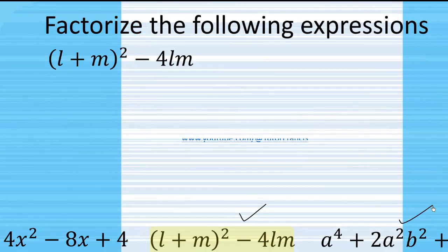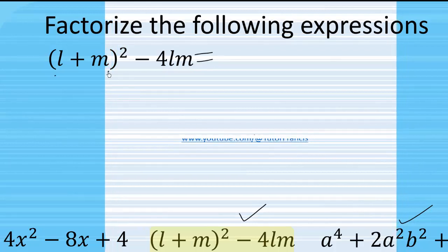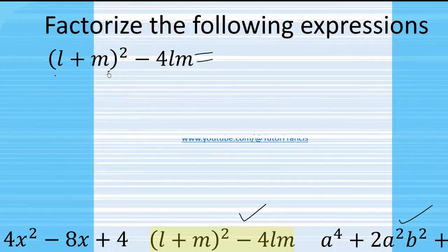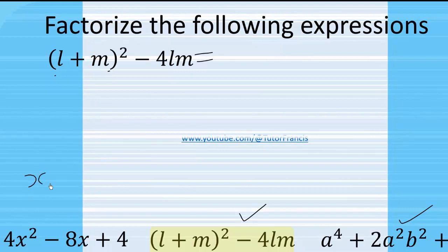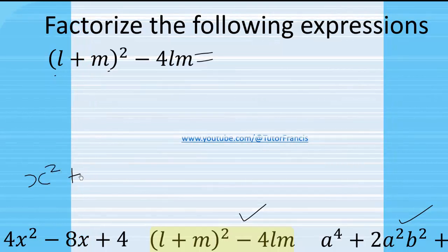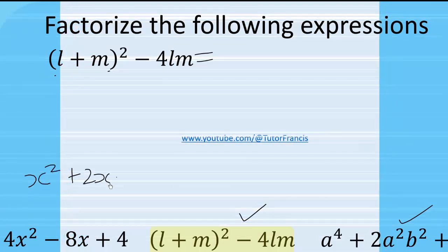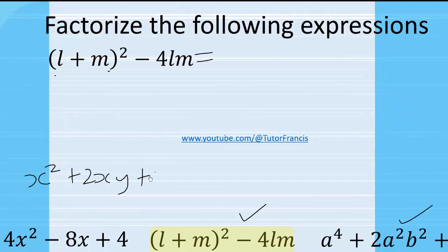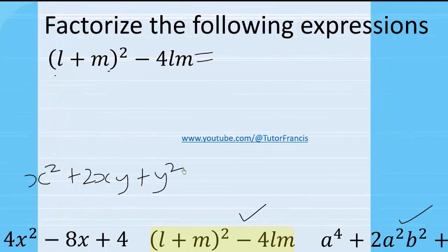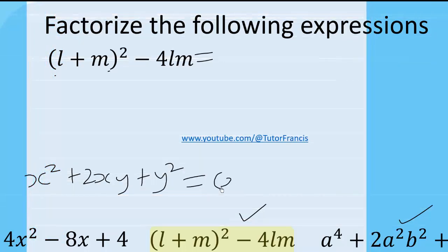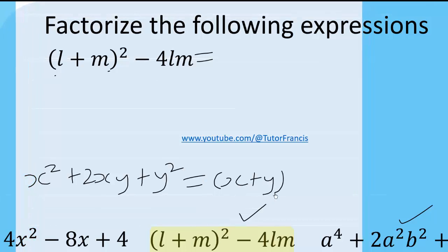So the first thing we are going to do here is to expand this. Recall this identity: when we have x² + 2xy + y², this is equal to (x + y)².